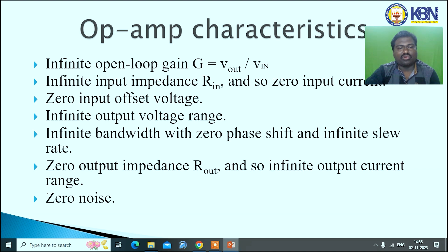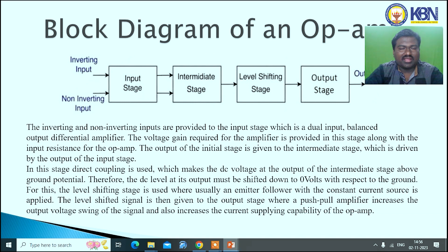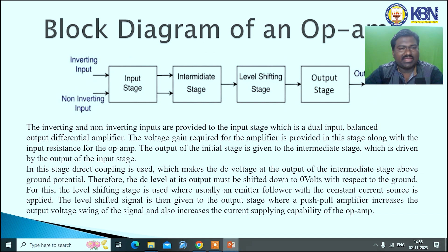Here is the block diagram of the operational amplifier. The input terminals are the inverting input terminal and the non-inverting input terminal. The first stage is the input stage, followed by the intermediate stage, then the level shifting stage, and finally the output stage.